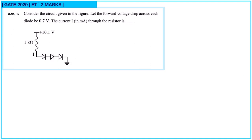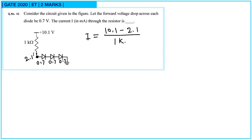Question 42: consider the circuit in the figure with three diodes, each having a forward voltage drop of 0.7 V. The voltage at the junction point is 0.7 × 3 = 2.1 V. The current through the resistor is (10.1 − 2.1) / 1 kΩ = 8 / 1k = 8 mA. The answer is 8 mA.